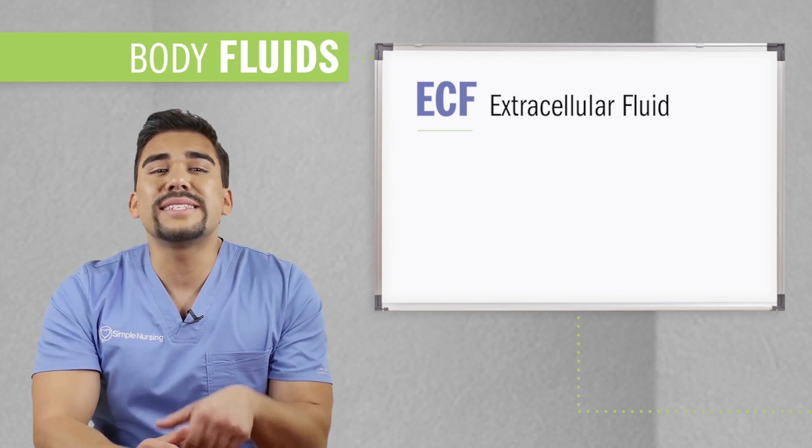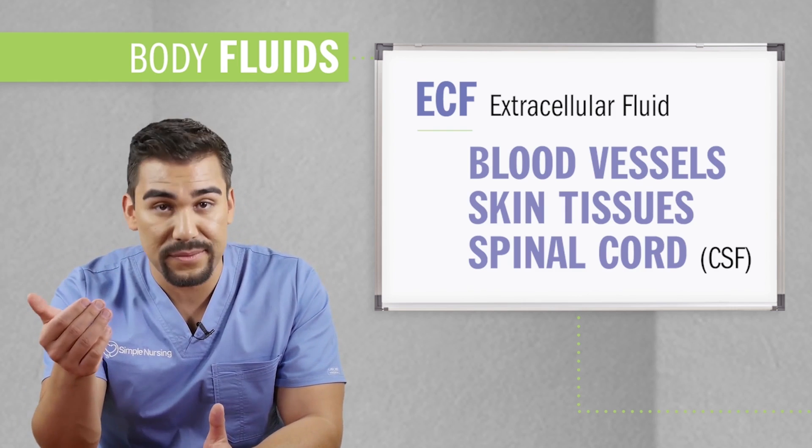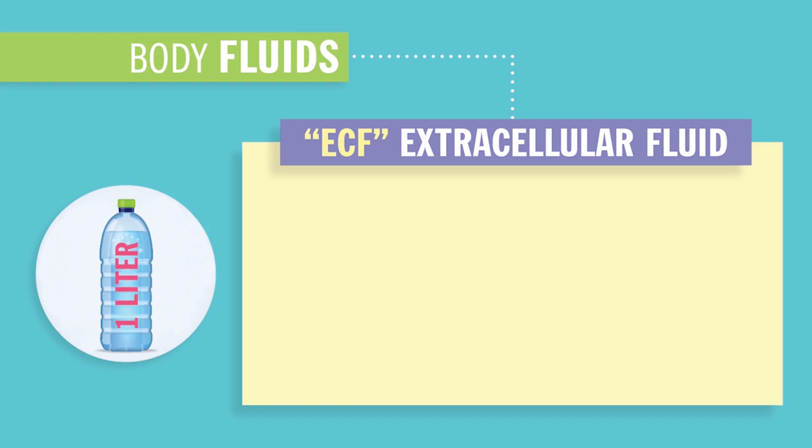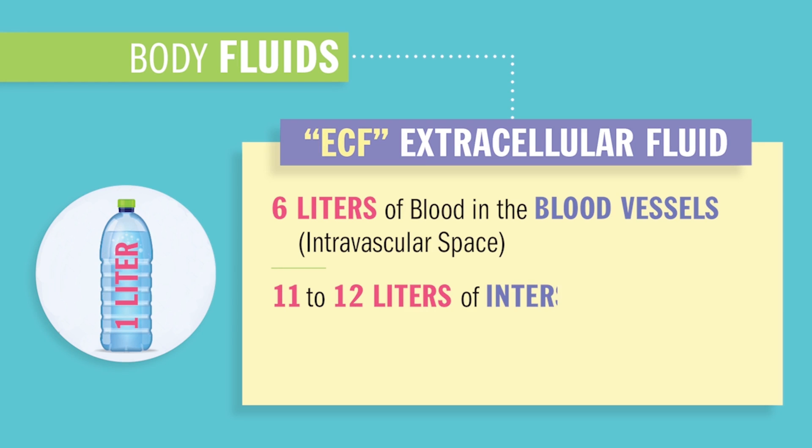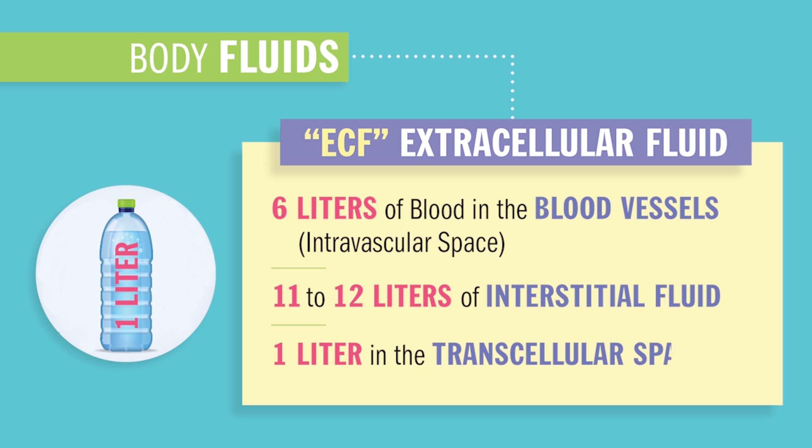Electrolyte imbalances cause so many muscle problems. Now let's switch to the ECF, the extracellular fluid — the fluid inside the blood vessels, the skin tissues, and even the spinal cord fluid called CSF. It accounts for only one-third of body fluids. Technically, 6 liters of blood circulate in the vascular spaces, 11 to 12 liters are in the interstitial fluids, and 1 liter is in the transcellular space — the fluid between our cells, including CSF around your brain and spinal cord, pericardial fluid around your heart, synovial joint fluid, intraocular eye fluid, pleural lung fluids, and digestive secretions.